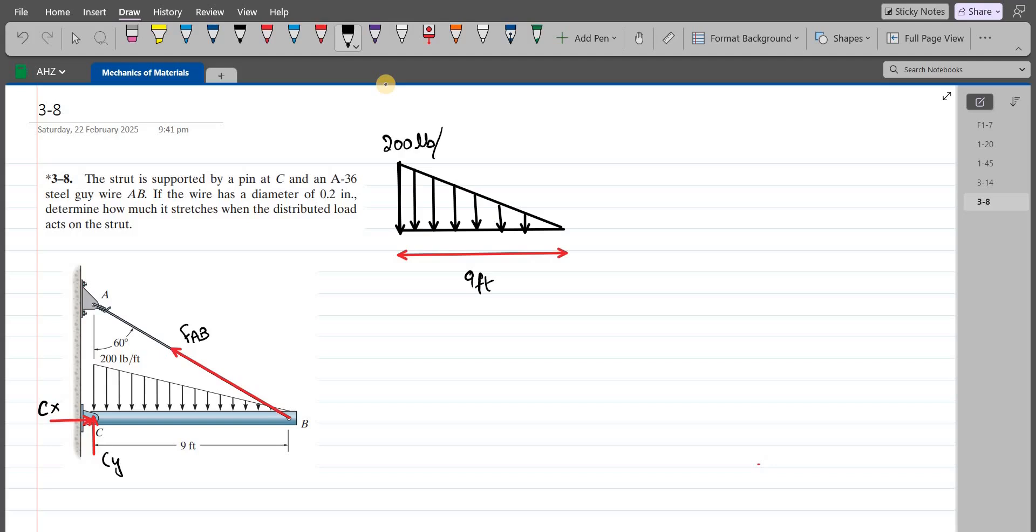It has a base of 9 feet and a height of 200 pounds per foot. To find the resultant, the resultant FAB equals the area of this triangle, so one-half times the base, which is 9, times the height, which is 200. The resultant force of this triangular distributed loading is 900 pounds. Now we have to find the location of the resultant force. The location would be one-third of the base from the thicker end.